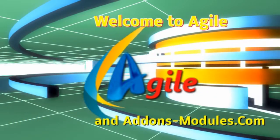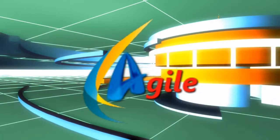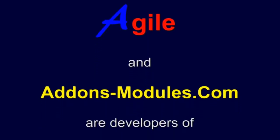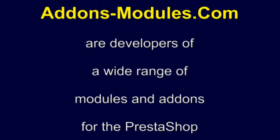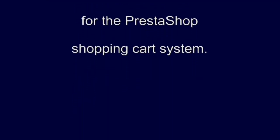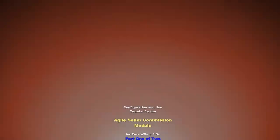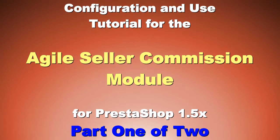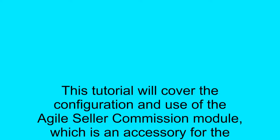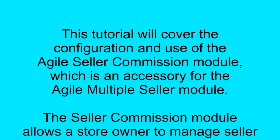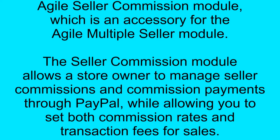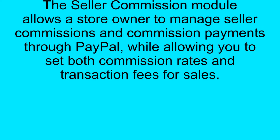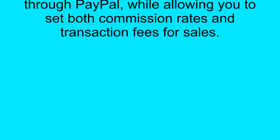Welcome to Agile and Add-Ons Modules.com, developers of a wide range of modules and add-ons for the PrestaShop Shopping Cart System. This tutorial will cover the configuration and use of the Agile Seller Commission Module, which is an accessory for the Agile Multiple Seller Module. The Seller Commission Module allows a store owner to manage seller commissions and commission payments through PayPal, allowing you to set commission rates and transaction fees for sales.